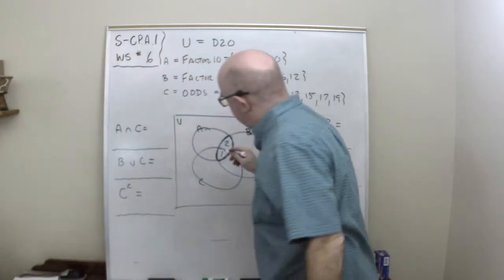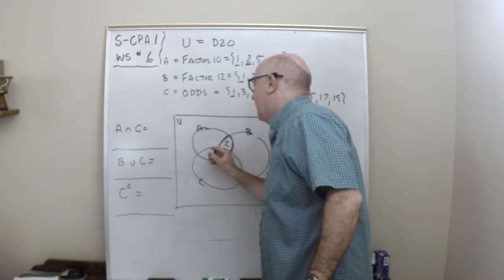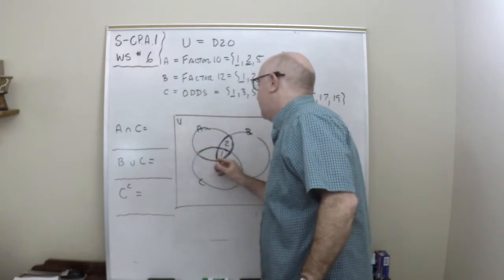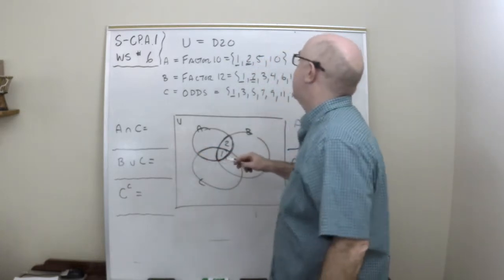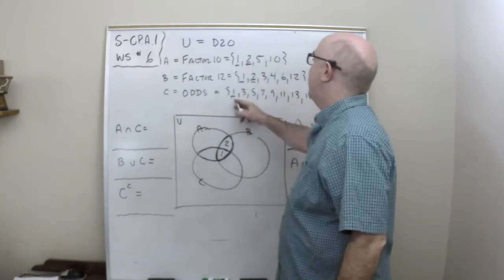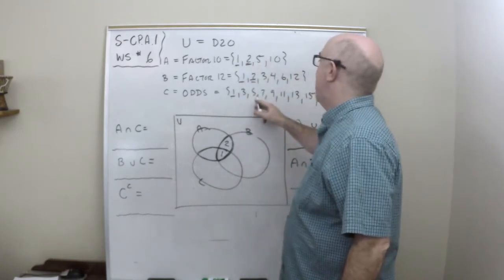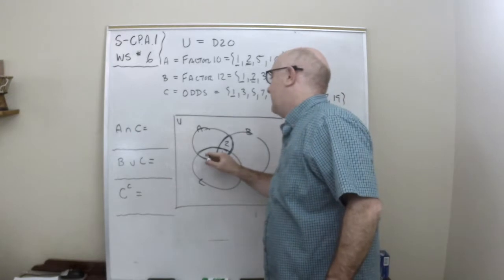Now we want to check what's in common between A and C, so that would be this region between A and C. The 1's are in common, the 5 is in common, and that looks like about it.